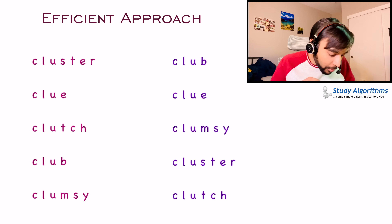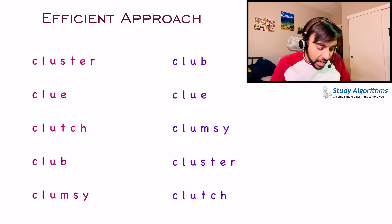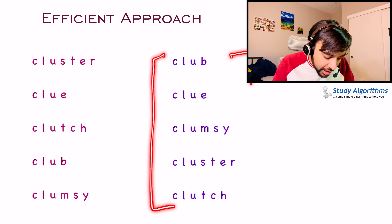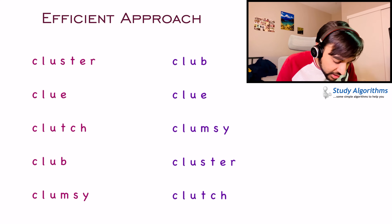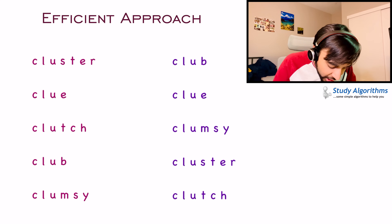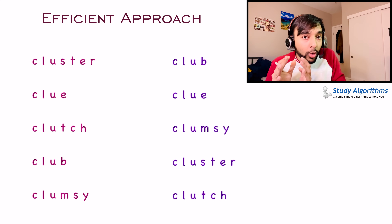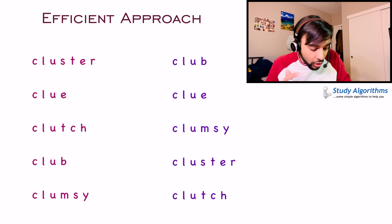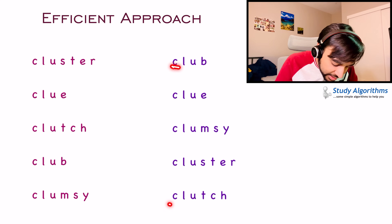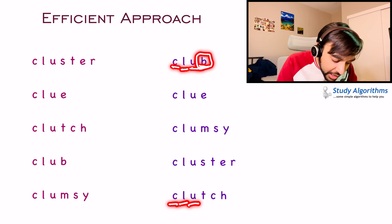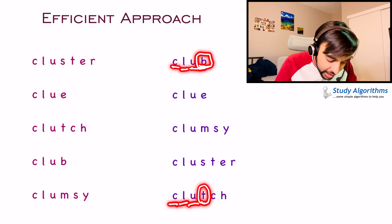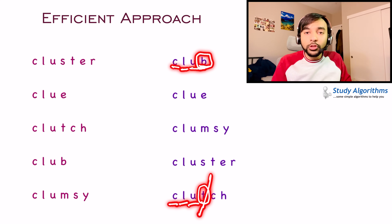Now let us look back at our original problem. When we sorted our array, we got this new sorted array. To find the longest common prefix, what you can do is compare the first word and the last word, and try to look up till where these words are common. You see that C is common, L is common, U is common. And then you see B in one and T in the other — that means you need to stop.